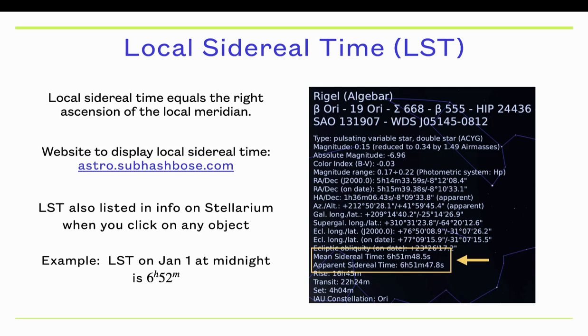The local sidereal time is also listed on the information in Stellarium. If you click any object, in addition to all this other information, you'll get the mean and apparent sidereal time. The apparent sidereal time is the true sidereal time. The mean sidereal time assumes that the Earth is going around the Sun at a constant velocity and not changing its speed. The two are very similar, so we don't really have to worry about the difference between them. But you can get the sidereal time from Stellarium.